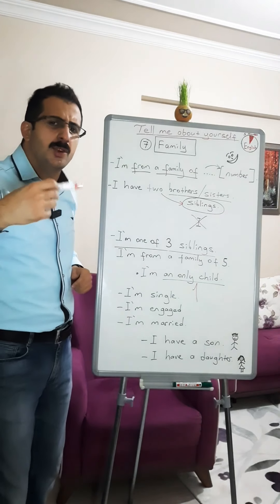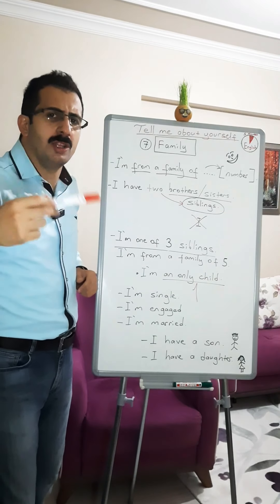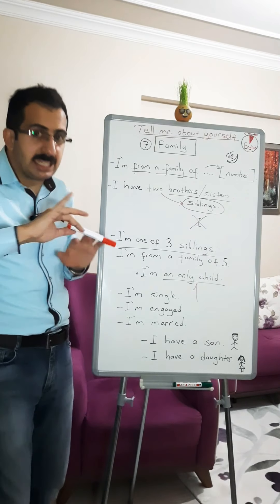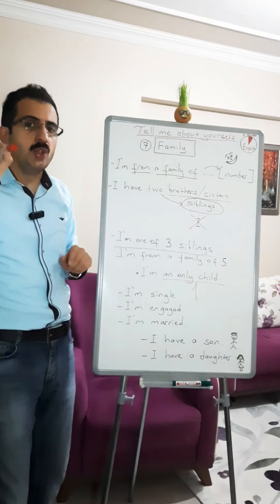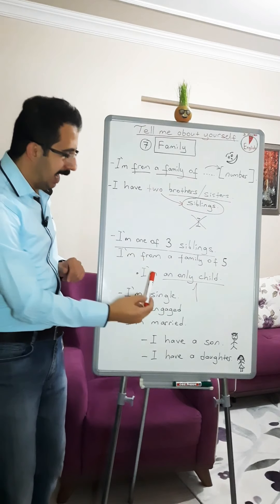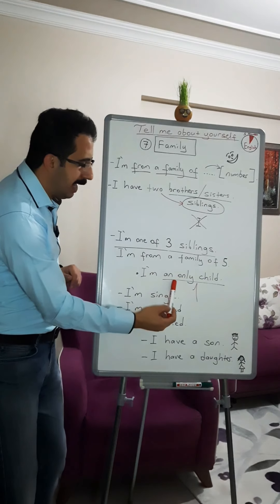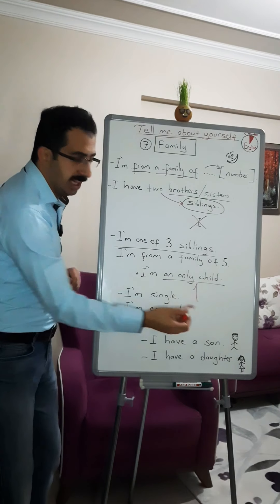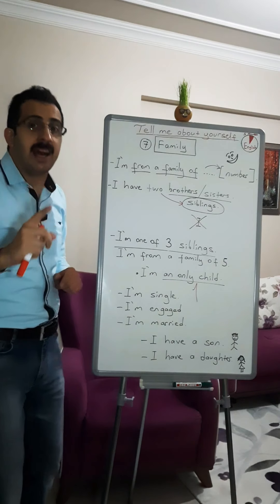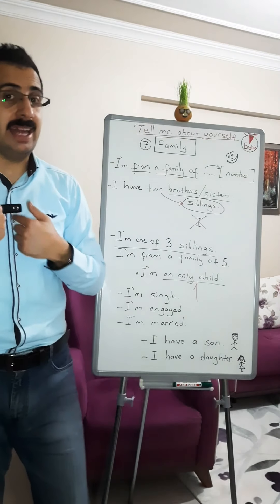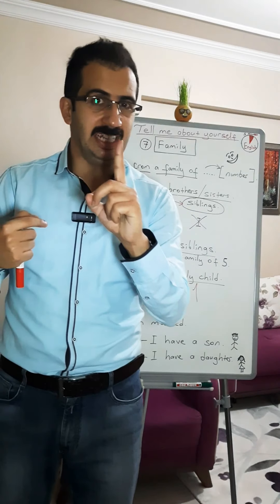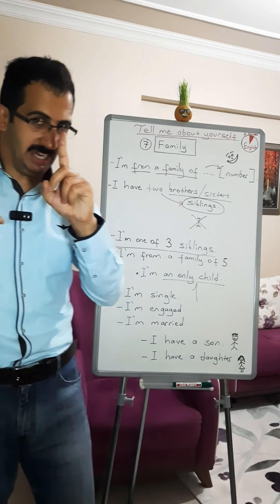If you don't have any siblings, you can say: 'I am an only child.' That means you are the one and only child in the family.